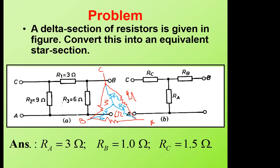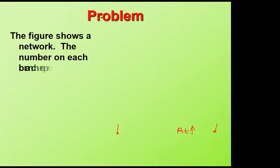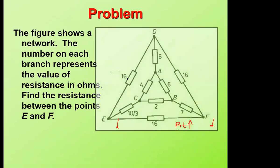So R_c = 27/18 = 1.5, R_b = 18/18 = 1, and R_a = 54/18 = 3. That's the simple way of converting from delta to star. Remember, in the exams I don't give you an open-ended circuit like this — this is just for you to practice. Otherwise it comes as shown in the previous lectures.